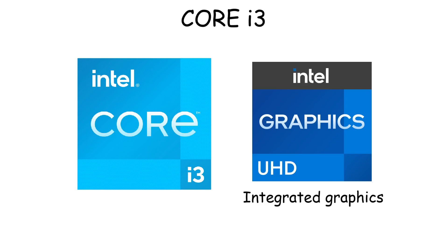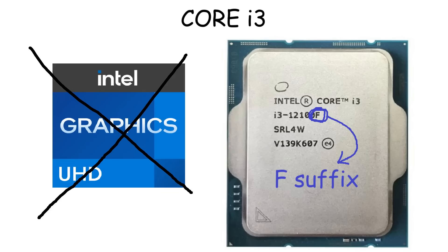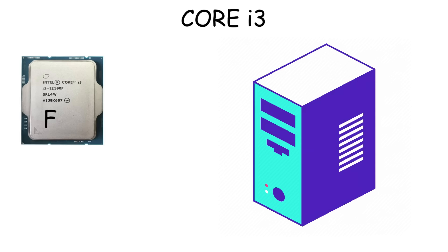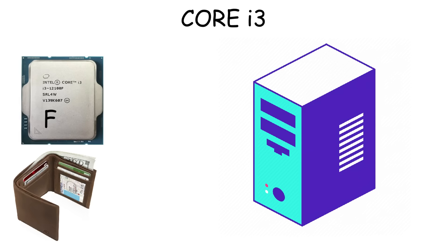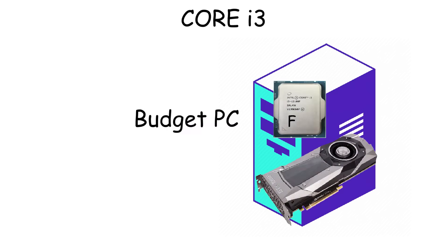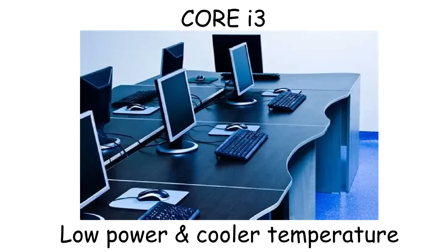On desktop, Intel Core processors usually come with integrated graphics, but some versions also have the F suffix, which means those don't have integrated graphics at all, so you need to have a graphics card in your PC. The good thing is these F models are usually a bit cheaper, so if you already have a spare graphics card, they're a good option for a budget build. There's also the T version, which is made for low-power desktops, making it ideal for compact PCs or office setups because it uses less electricity and has a cooler temperature.